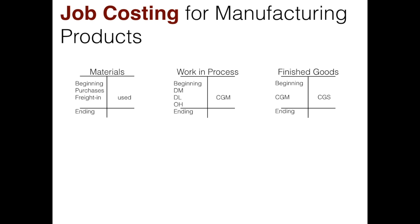When we use materials they go into work in process. In work in process we have our three product costs: direct materials, direct labor, and overhead. We're working on a product or a job and getting it completed. Once it is completed it moves out of work in process as cost of goods manufactured into finished goods, where it stays until it is sold and costed as cost of goods sold.